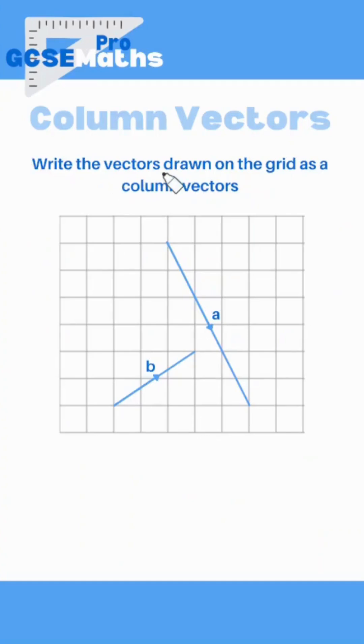Do you know how to do column vector questions? Write the vectors drawn on the grid as column vectors. So we've got two options here, A and B.